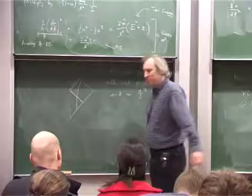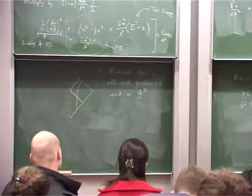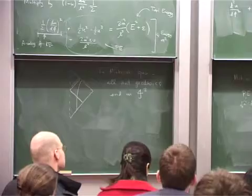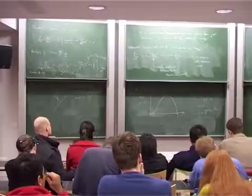A null geodesic with angular momentum could look like it bounces off near the origin. The fact that circular null orbits exist is a peculiar consequence of the fact that gravity affects light as well as matter.